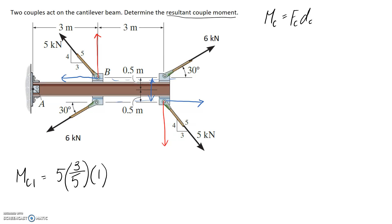We also need to consider the direction the couple will act — clockwise or anti-clockwise. Thinking of it like a steering wheel, these horizontal forces will try to rotate anti-clockwise against each other, so this goes in as positive in the equation.